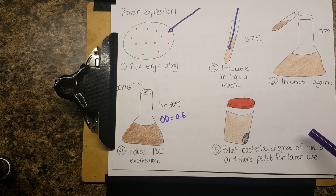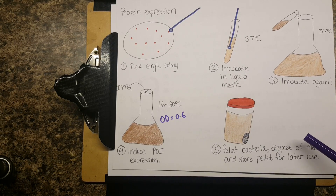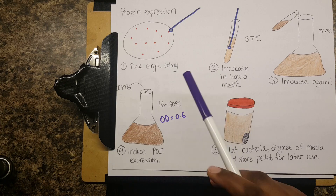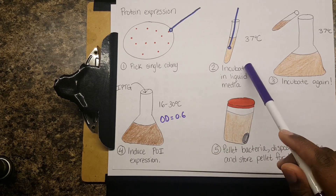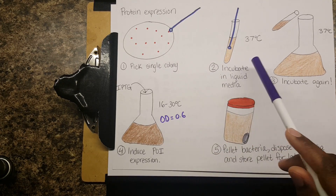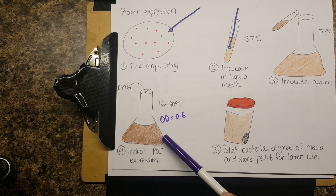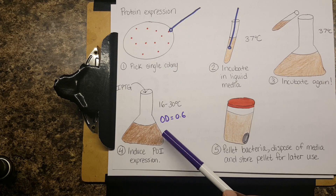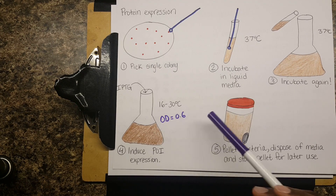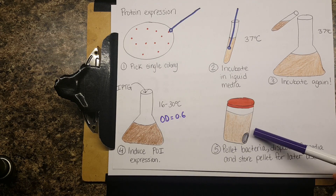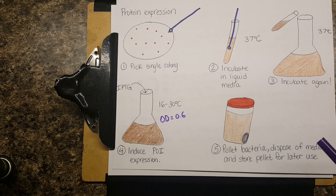To recap: you pick a single colony, incubate in a small liquid culture, use that to inoculate a bigger culture, and once you have enough bacteria you induce expression of your protein of interest — usually lowering the temperature. After your growth period, you pellet the bacteria using a centrifuge, dispose of the media, and store the pellet for later use.